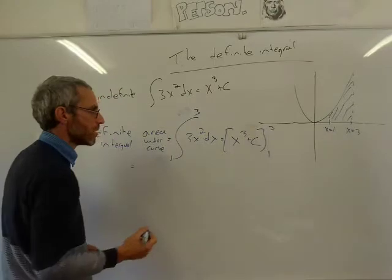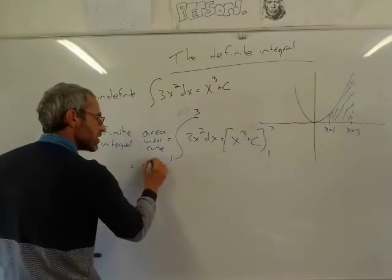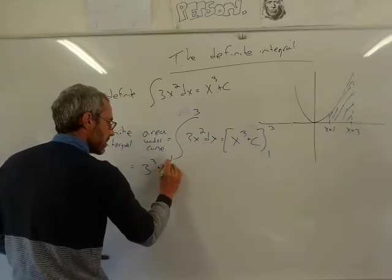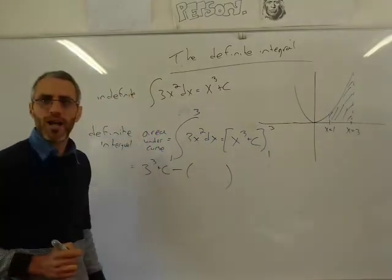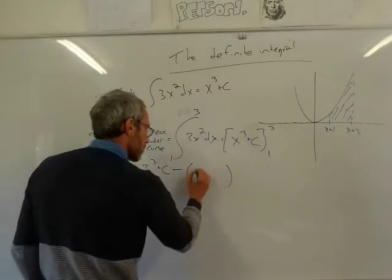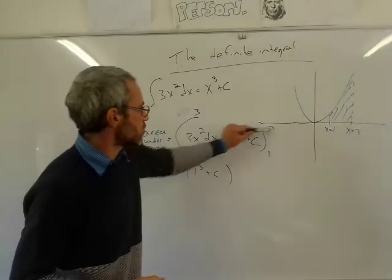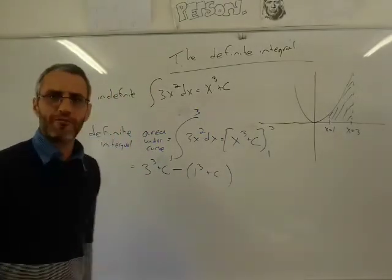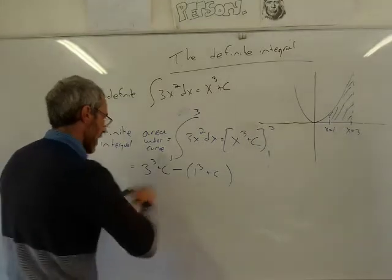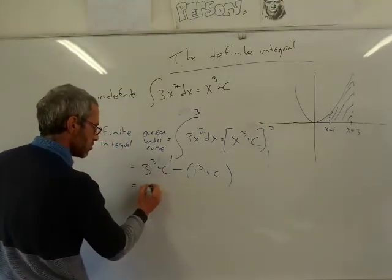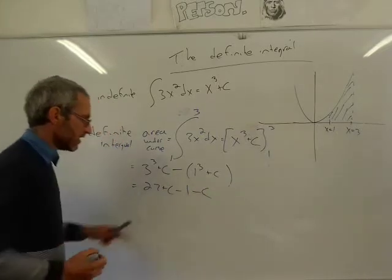We substitute the number at the top first, so we write 3 cubed plus c, then minus the value at the bottom: 1 cubed plus c. We substituted 3 and 1 and found the difference — the top value minus the smaller value. We've got 3 cubed which is 27, plus c, minus 1 cubed minus 1, minus c.